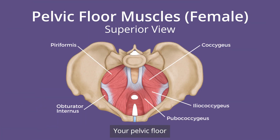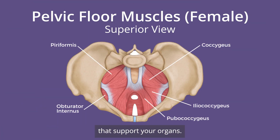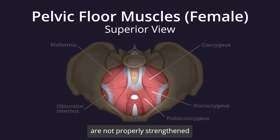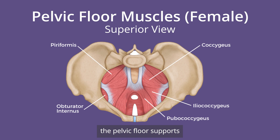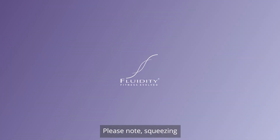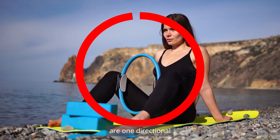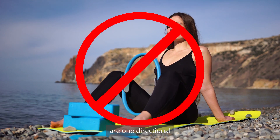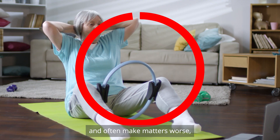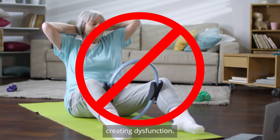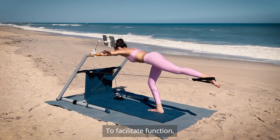Your pelvic floor has big hammock-like muscles that support your organs. If these muscles are not properly strengthened into a neutral pelvic girdle, the organs the pelvic floor supports will not function correctly. Please note: squeezing exercises like Kegels are one-directional and often make matters worse, creating dysfunction.